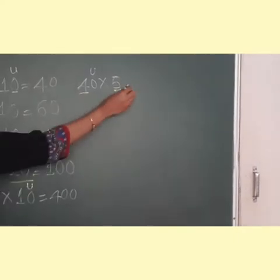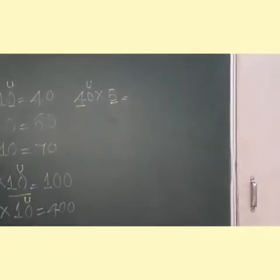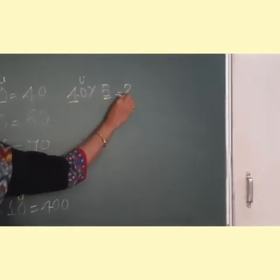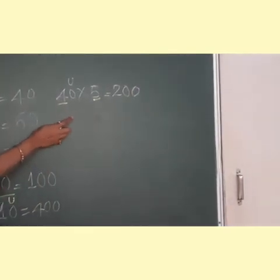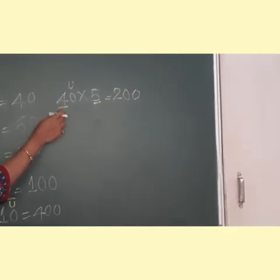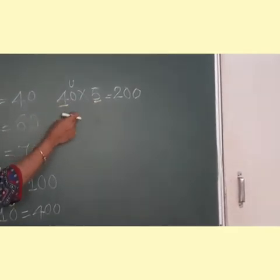So go on, say in the table of 4: 4 ones are 4, 4 twos are 8, 4 threes are 12, 4 fours are 16, 4 fives are 20. Now it's 20 and this 0 you are going to add here. So what is the product of 40 multiplied by 5? It is 200.